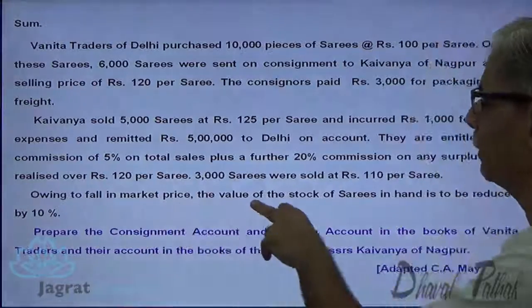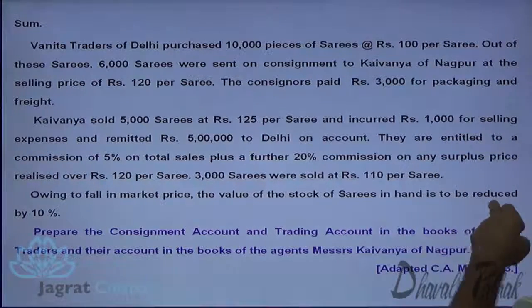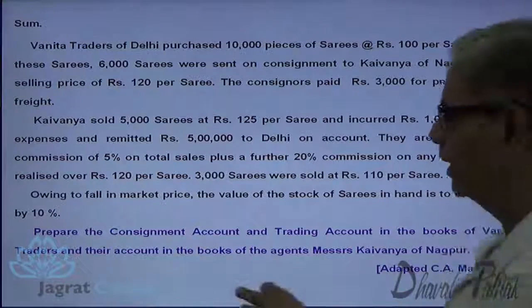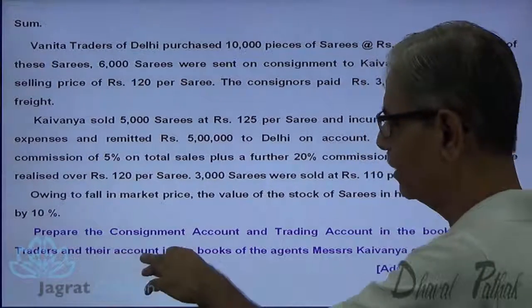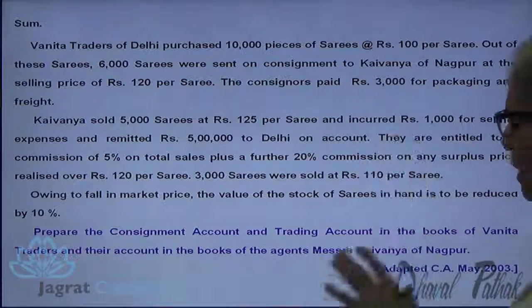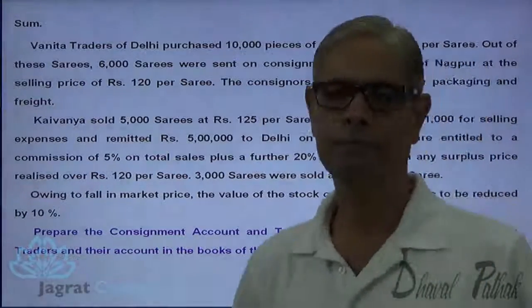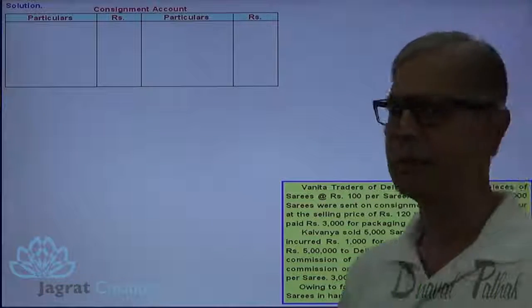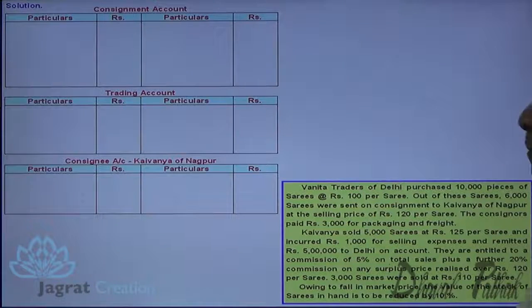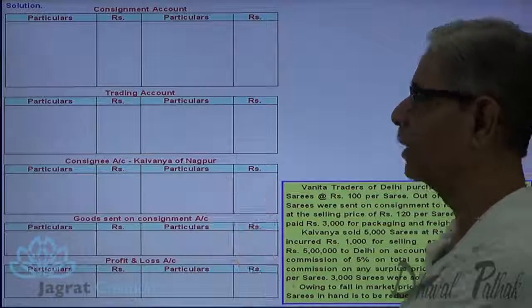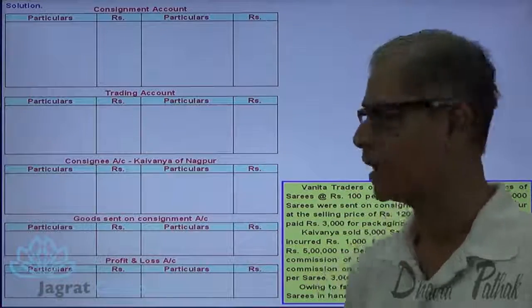Owing to the fall in market price, the value of stock of sarees on hand is to be reduced by 10%. Prepare the consignment account, trading account in the books of Bhanita Traders, and accounts in the books of agent Mrs. Kaivanya of Nagpur. These are the various accounts to be prepared. Now let me start with the sum. The accounts I will prepare are: consignment account, trading account, consignee account, goods sent on consignment account, and profit and loss account.